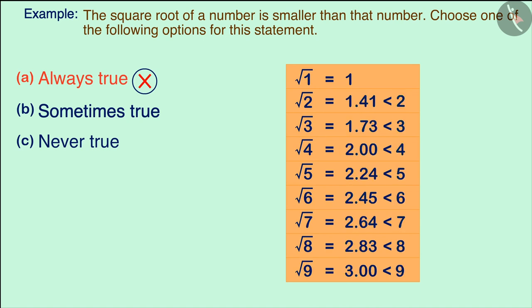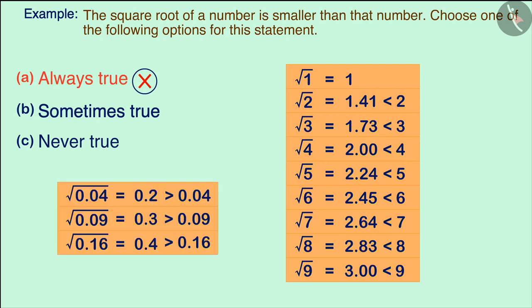But for positive numbers less than 1, i.e., for numbers between 0 and 1, this is not true. Look at these decimal numbers. Their square roots are greater than them.